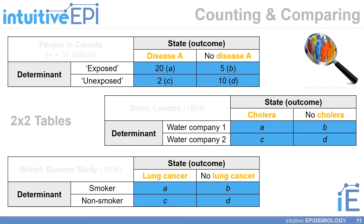As I mentioned in the last video, epidemiology is a counting and comparing exercise, and the best way to visualize this exercise is to use what we call a two-by-two table.